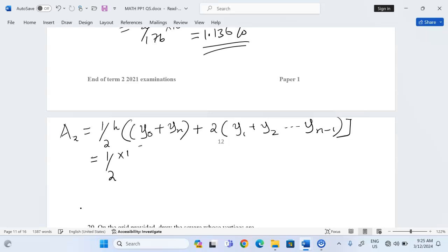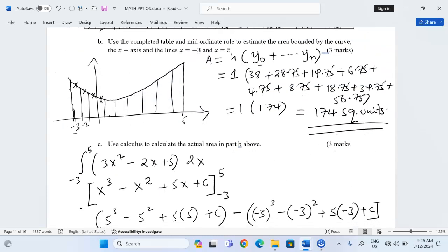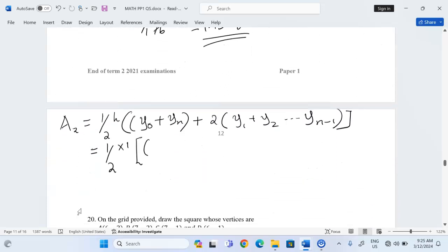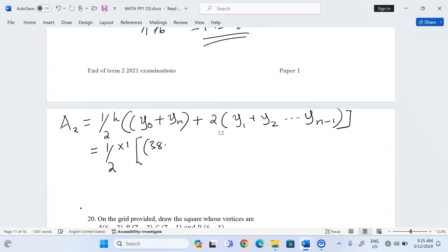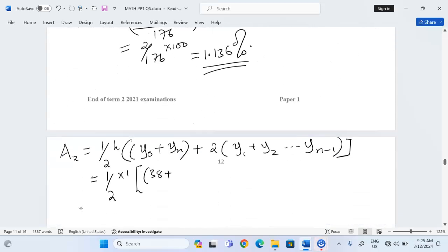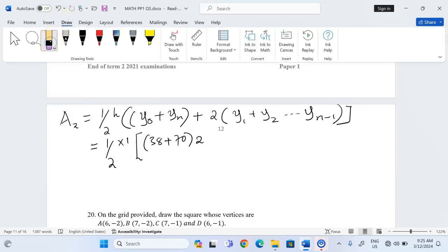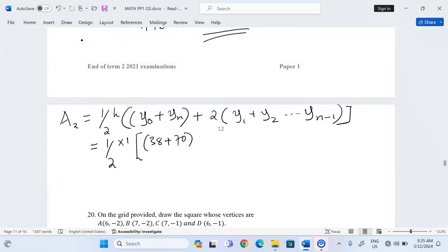Half times 1, this would be multiplied by the first value of Y which will be at negative 3, we shall have 38. Then we add the last value which is at 5, we have 70. Then plus 2 times all the other values of Y added. We need 21, the other one is 10, 5, 6, 13, 26, and 45. All the others added.